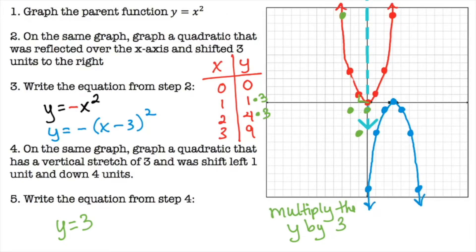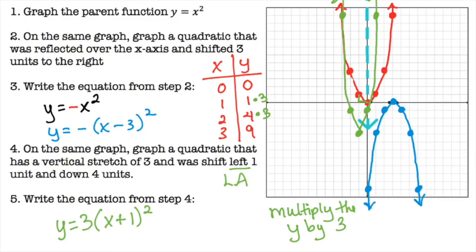So there's the vertex, and over one up twelve gives the next point, then draw the parabola — it's going to be narrow due to the stretch. To write the equation: a = 3 gives the stretch; shifting left one means adding one inside the parentheses (x + 1)²; going down four means minus four for k. So the equation is y = 3(x + 1)² − 4. That's how we shifted left one and down four for each point on the parabola.